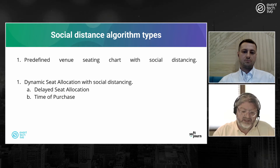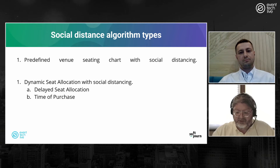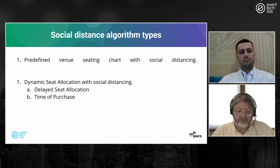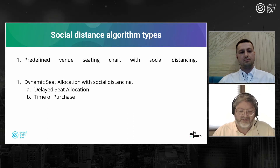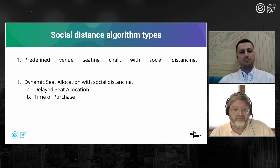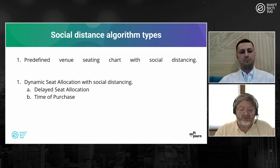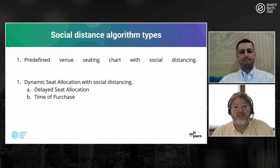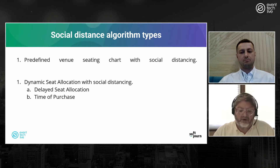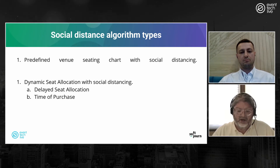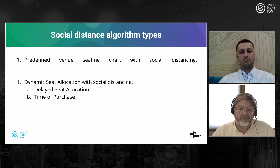If you do it manually you can only accommodate so many seats, but if you do it dynamically you can fit more people in. With the predefined approach, someone goes to buy a ticket and the seats are already pre-selected — all seats required for proper social distancing are blocked off, and patrons are forced to pick accordingly.